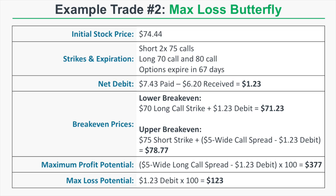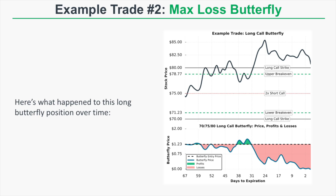Example trade number two: a maximum loss butterfly. The initial stock price is $74.44. The long call butterfly consists of a long 70/75 call spread and a short 75/80 call spread — long one 70 call, short two 75 calls, long one 80 call — all expiring in 67 days. Net debit is $1.23. Lower break-even is $71.23, upper break-even is $78.77. Maximum profit is $377 (the $5 spread width minus $1.23 debit times 100). Maximum loss is $123.